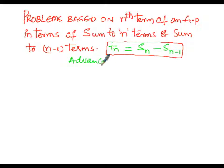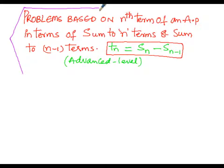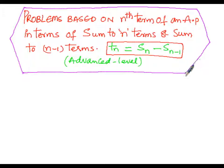The formula for finding the nth term of an AP is a plus n minus 1 into d, whereas the sum of n terms when first term a and common difference d is known is given by S(n) = n/2 into (2a + (n-1)d). Now the problem starts.